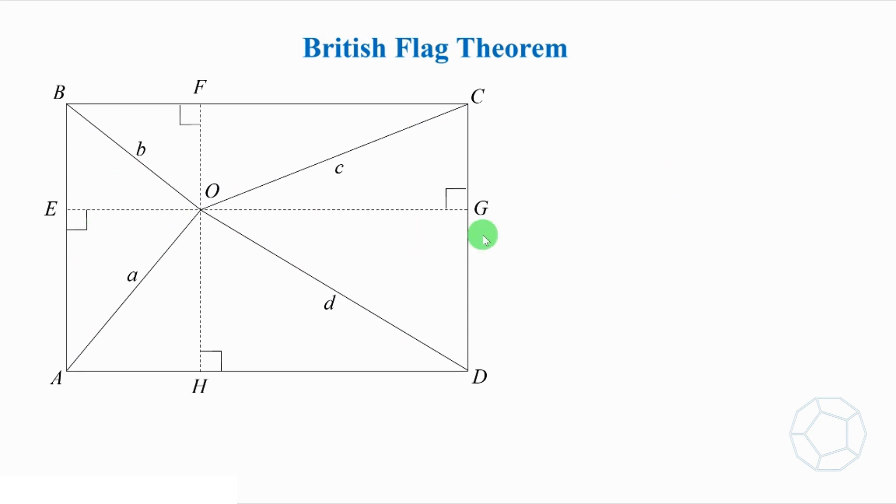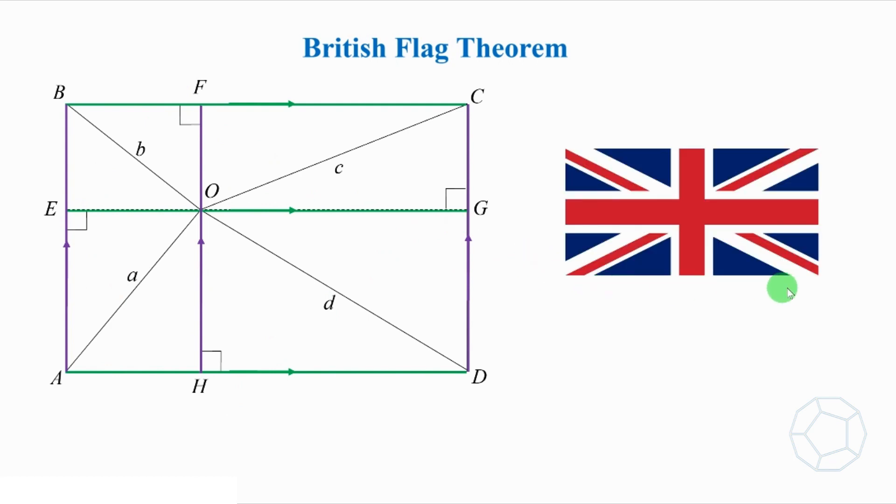Let's construct two line segments EG and FH. They pass through the point O, such that EG is parallel to BC and AD, and FH is parallel to BA and CD. Therefore, we have a couple of right angles. Now, can you imagine that this figure looks like the British flag?